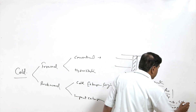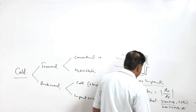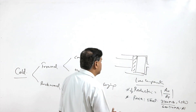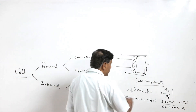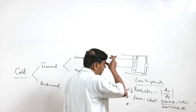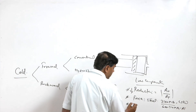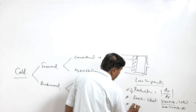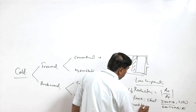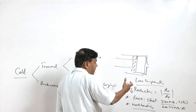Cold extrusion is difficult because of the low temperature conditions. Another thing is that work hardening of the material at room temperature increases the strength.